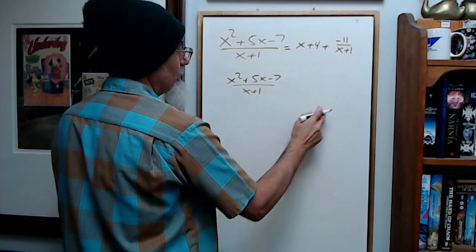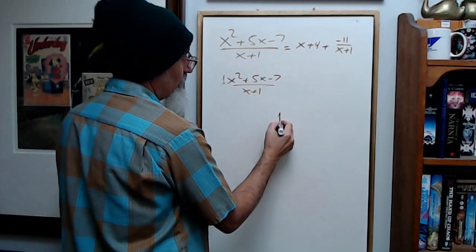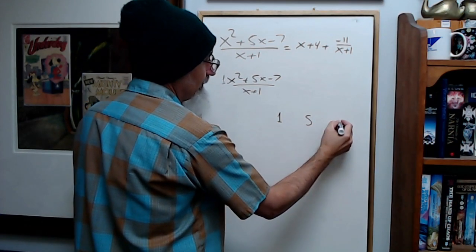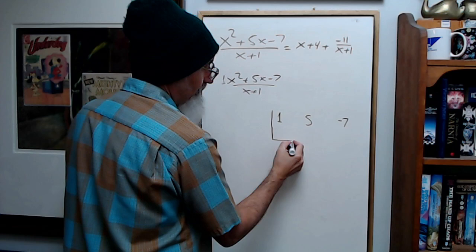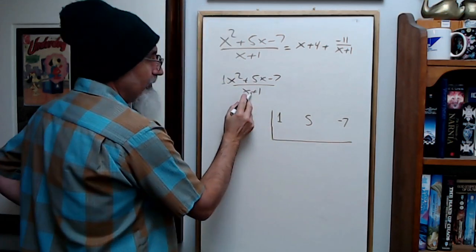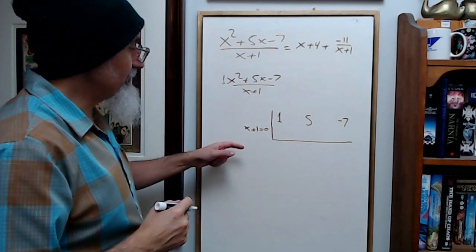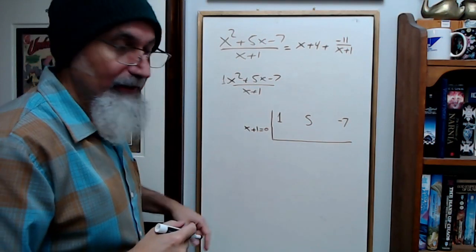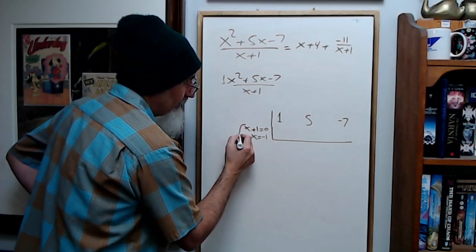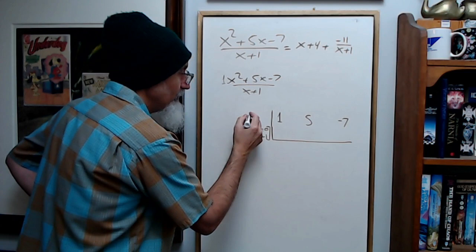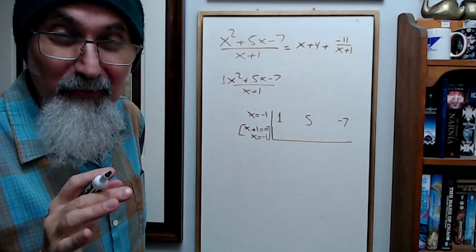What you do is take the coefficients in front of these and lay them out: 1, 5, negative 7. You're going to do it this way. Then you're going to take x plus 1 and set it equal to 0 because you're assuming that might be a factor. You're going to write this as x is equal to negative 1.